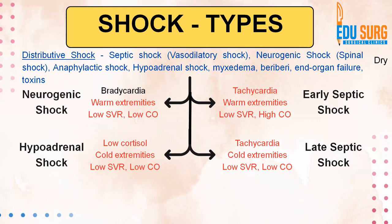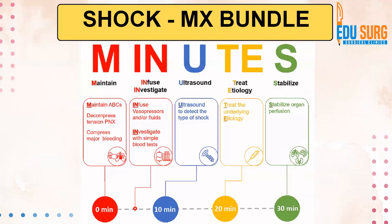There are very minor differences between all these. If you have warm extremities and a dry patient: neurogenic shock and early septic shock. If you have cold extremities and a dry patient: hypoadrenal shock and late septic shock. All of them will have tachycardia other than neurogenic shock, which has bradycardia. This is because of absence of compensation of the vasculature, which happens due to the nerves being affected in neurogenic shock.